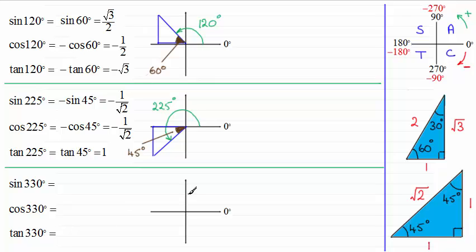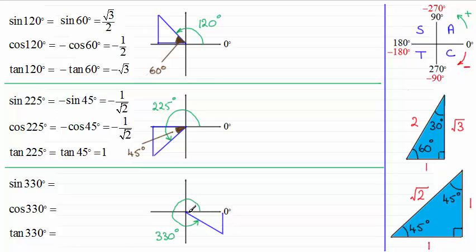For 330 degrees, draw the quadrant diagram — 330 degrees takes us round into the fourth quadrant. Mark in that angle as 330 degrees, then complete the triangle back onto the horizontal line. The acute angle in there is 360 minus 330, which is 30 degrees, so mark that in as 30 degrees.